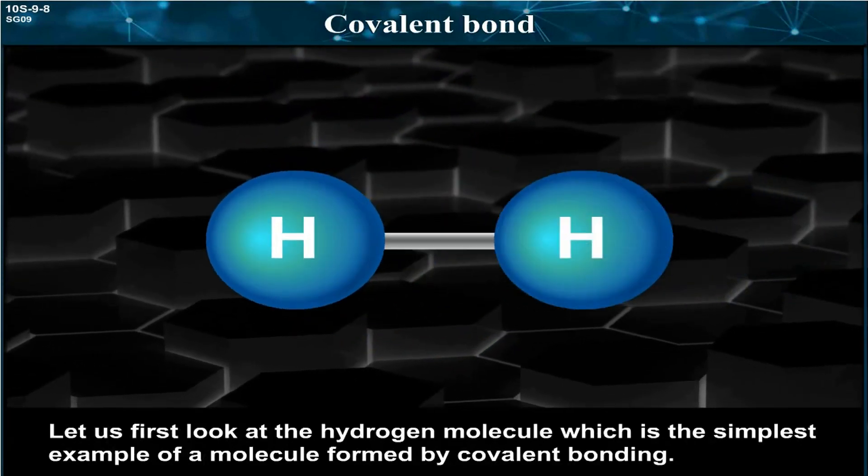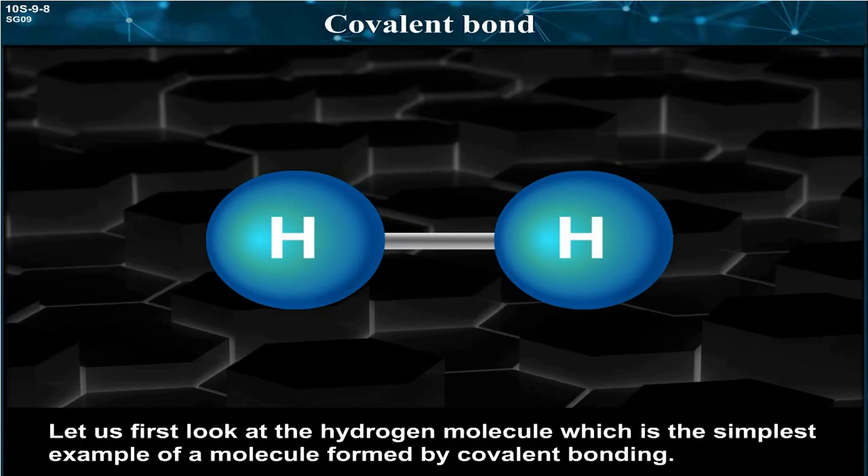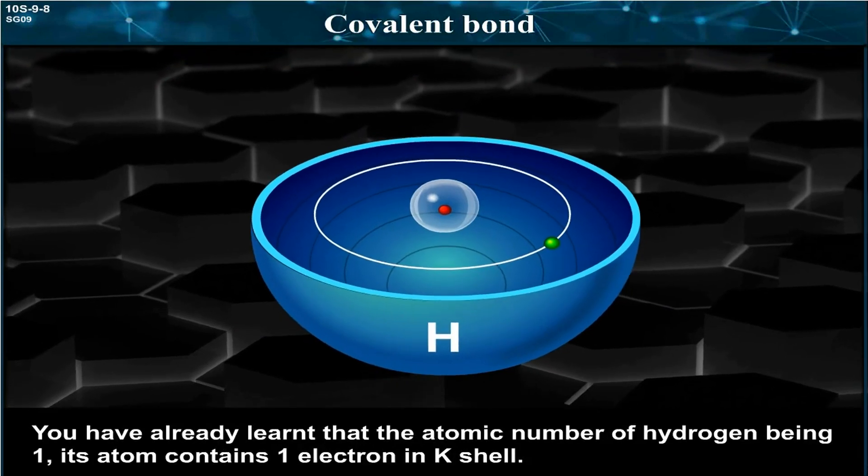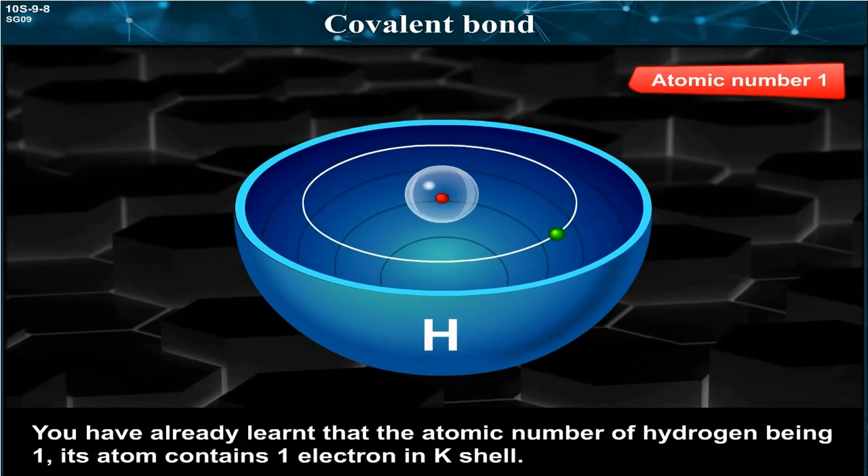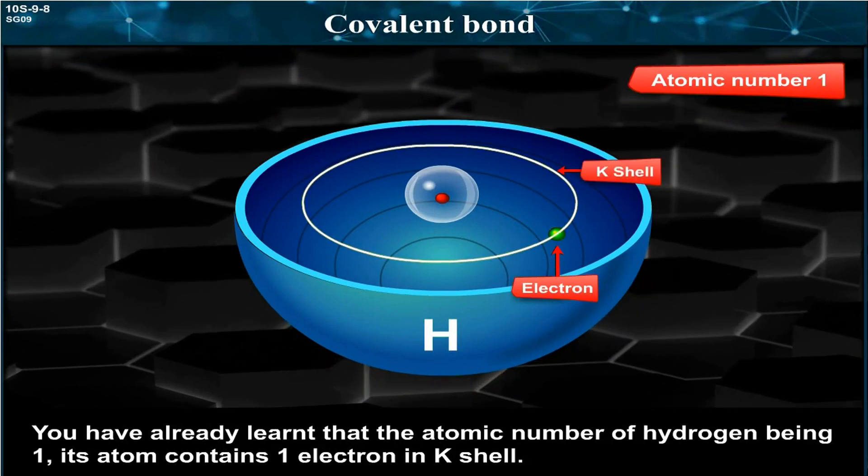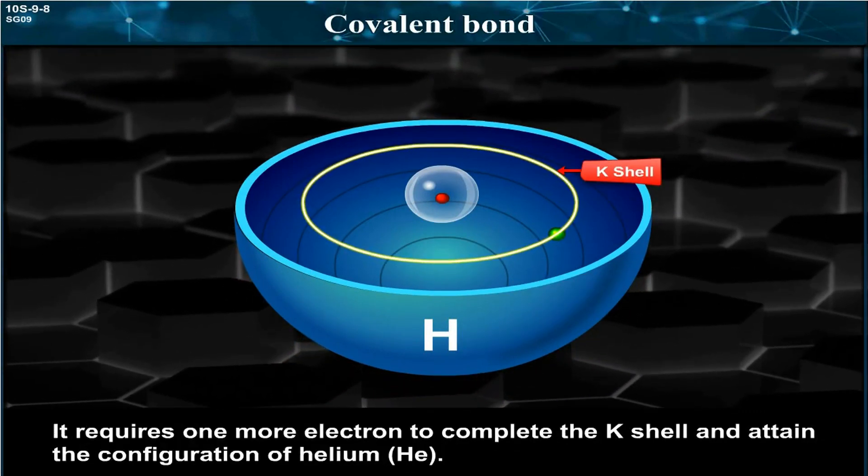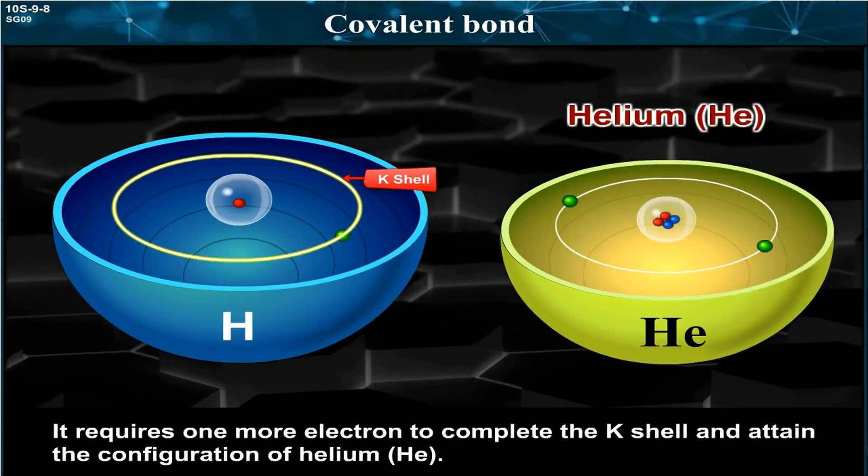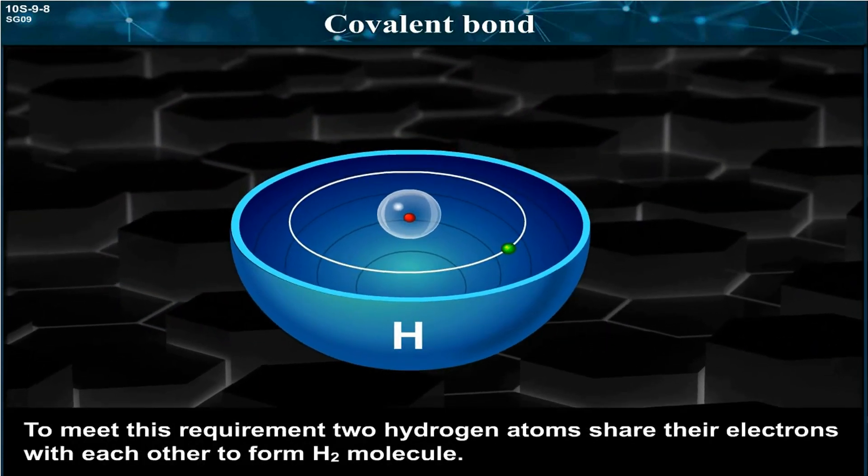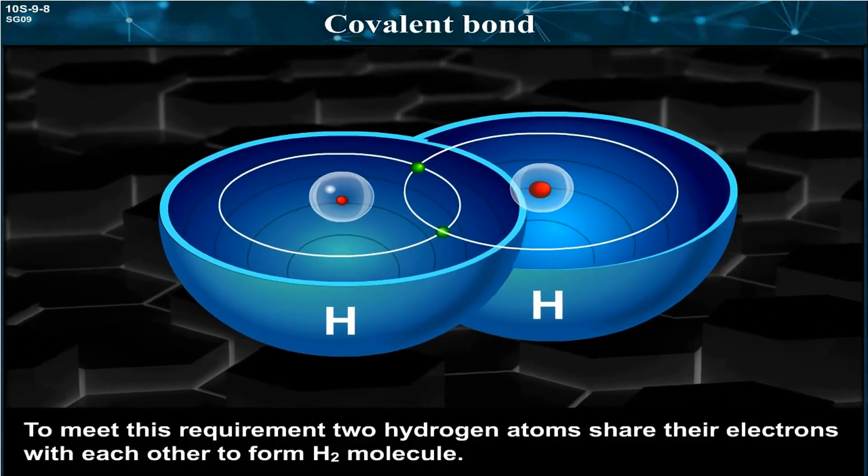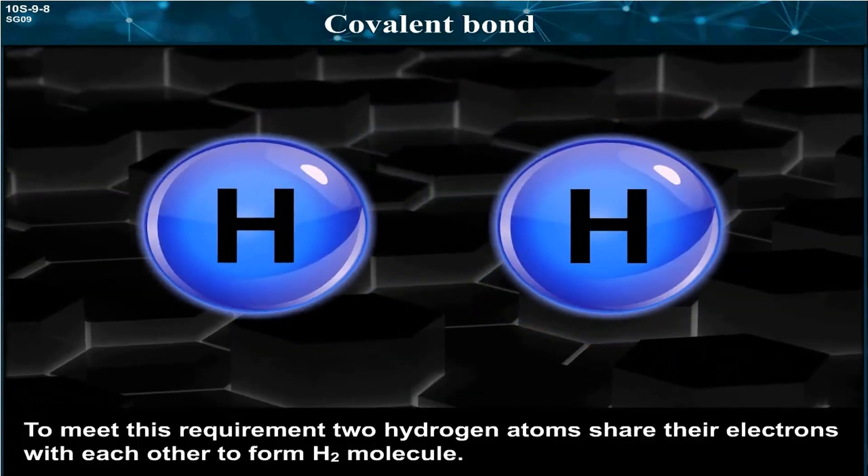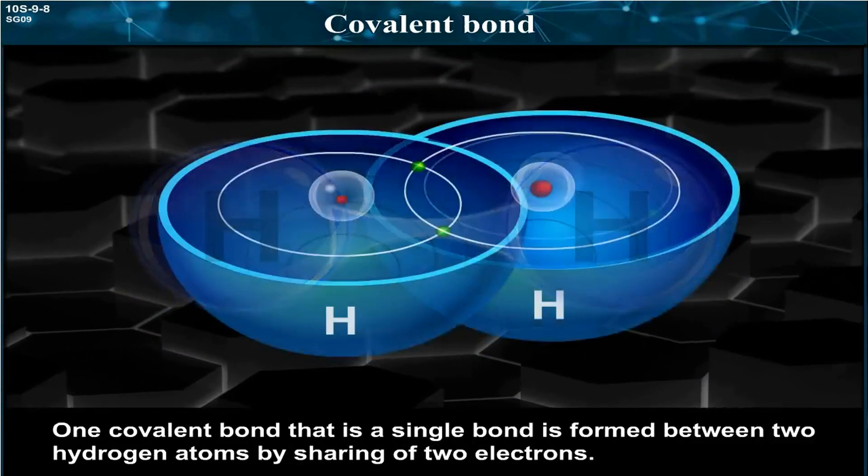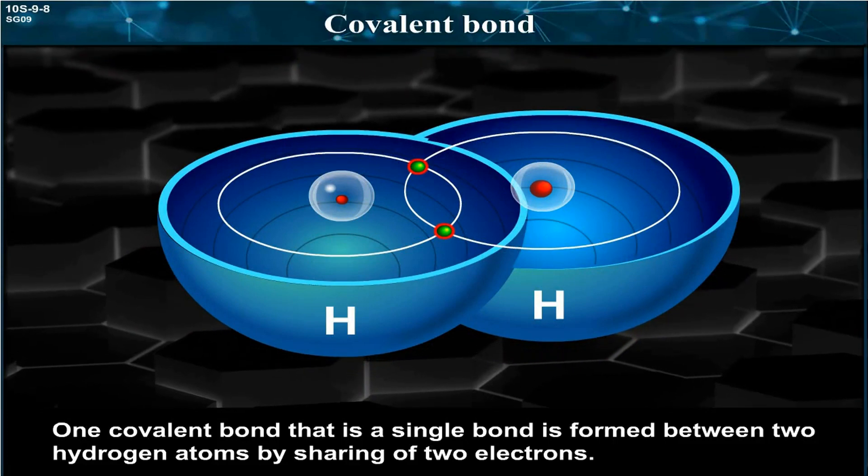Let us first look at the hydrogen molecule, which is the simplest example of a molecule formed by covalent bonding. The atomic number of hydrogen being 1, its atom contains 1 electron in K shell. It requires 1 more electron to complete the K shell and attain the configuration of helium. To meet this requirement, two hydrogen atoms share their electrons with each other to form H2 molecule. One covalent bond, that is a single bond, is formed between two hydrogen atoms by sharing of two electrons.